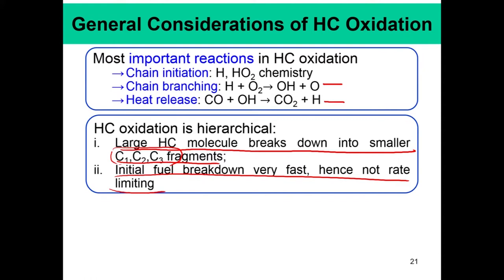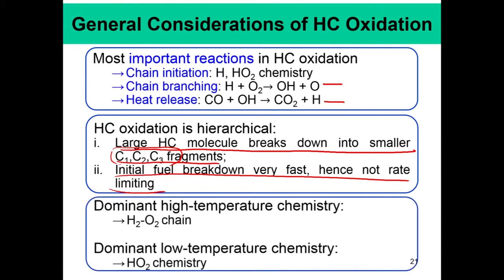CO oxidation is also very important, and next we will study methane oxidation. Methane is an important fuel in natural gas, and hydrogen is a very clean fuel — even more important because it does not produce CO2, which is a greenhouse gas known to be important for climate change. However, hydrogen is explosive over a large range of temperature and pressure, which prohibits large-scale use. The dominant high-temperature chemistry is governed by the H2/O2 chain, while the dominant low-temperature chemistry is governed by HO2 chemistry.